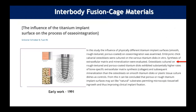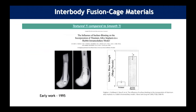Early work published in the 1990s looked at smooth versus rough-textured or porous-coated titanium and the effect on osseointegration. Osteoblasts cultured on rough-textured and porous-coated titanium exhibited much higher rates of bone-specific extracellular matrix synthesis and subsequent mineralization compared to those from smooth titanium. Another early paper showed that grit blasting of titanium surfaces provides much higher ability to resist shear forces compared to smooth titanium.